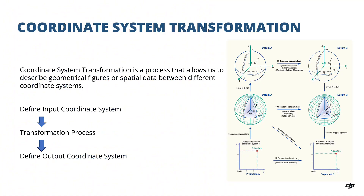Coordinate system transformation is a process that allows us to describe geometrical figures or spatial data between different coordinate systems, which means you can transform an input coordinate system into an output one.